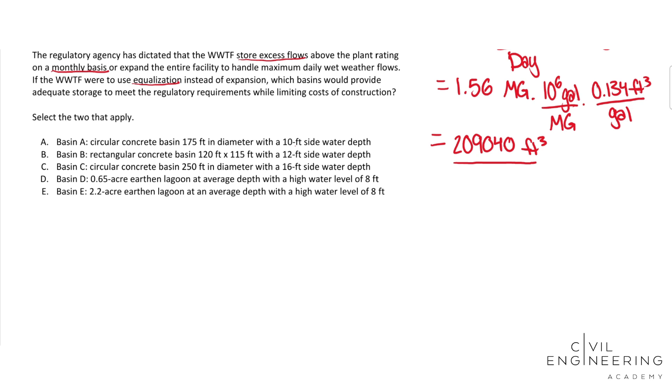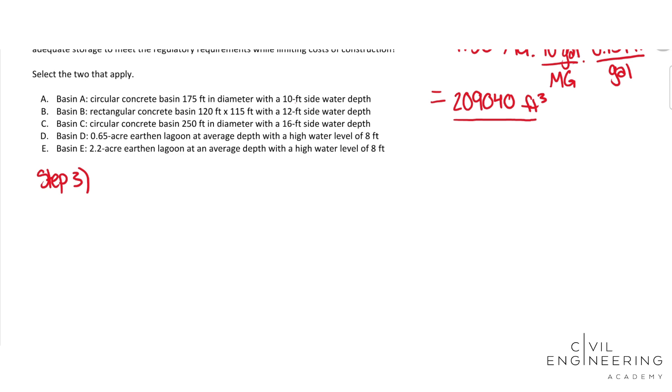So in step 3, we are going to convert all of these answer choices to volume, and then see which one will hold this 209,040 ft³ of water that we need to hold. We'll start with A, and we get volume equals πr²h equals π times (175.5 / 2)² times the height is 10 feet. And that will give us a volume equal to 240,528 ft³.